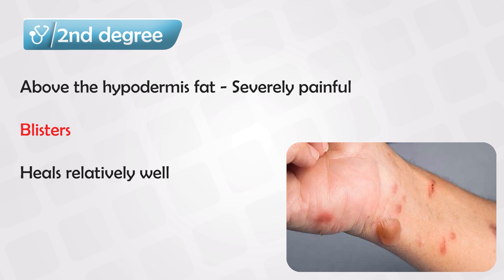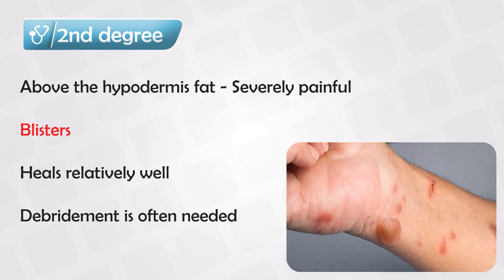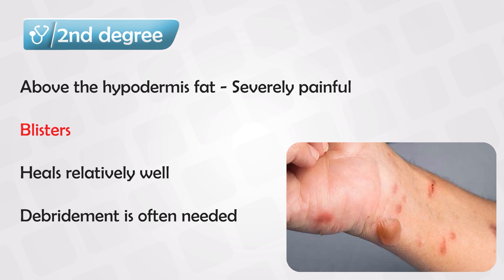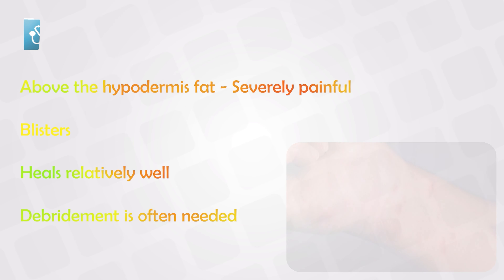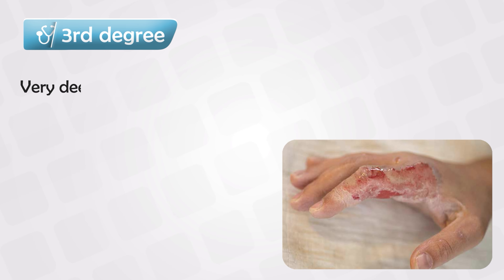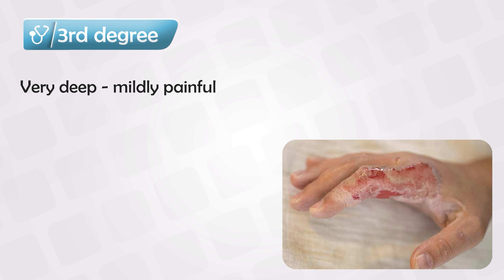Second-degree burns often heal leaving minimal to no scars. Sometimes there will be a small necrotic area in the middle of the burn area, and this necrotic tissue needs to be taken out — this is called debridement. Third-degree burns are ones that go deeper into the muscles or fat tissue.